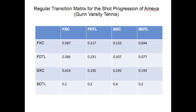After charting every ground stroke, we put our data into a Markov chain transition matrix. Here's the transition matrix representing Amaya. FXC represents forehand cross-court, FDTL represents forehand down the line, and BXC and BDTL represent their backhand counterparts. Since row 1 column 1 has a value of 0.587, 58.7% of Amaya's cross-court forehands were followed up by a subsequent cross-court forehand. Note how high the values in the first column are relative to the other columns, showing that more cross-court forehands were hit than any other shot.